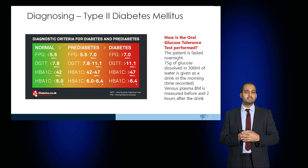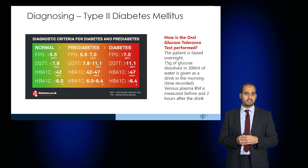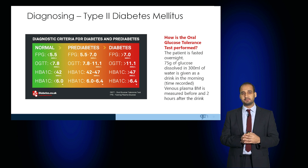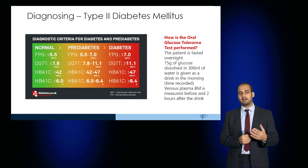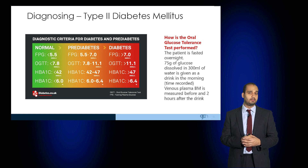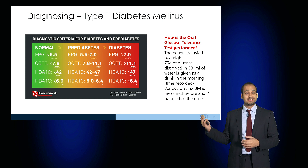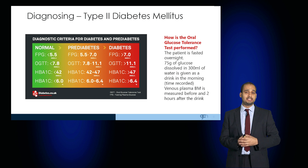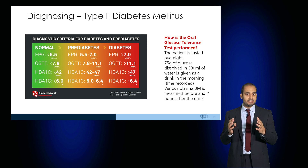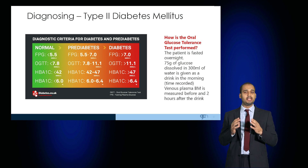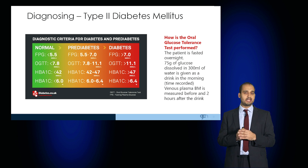In order to make the diagnosis there are various diagnostic criteria. A fasting plasma glucose of less than 5 millimoles per litre is considered normal. A fasting plasma glucose of more than 7 is diagnostic of diabetes. In between, a fasting plasma glucose of 5.5 to 7 is considered pre-diabetes.